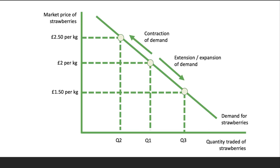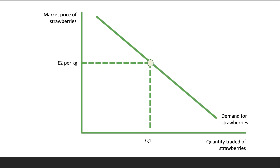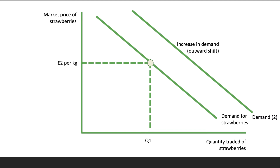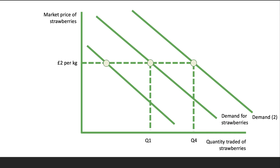If the price of the product itself changes, we move along the demand curve. However, we also know that the position of the demand curve in the XY space can change. At a given price of two pounds per kilogram, it could be the case that for the same price there's a higher level of demand - an increase in demand, or an outward shift. That means for that same price of two pounds per kilogram there's going to be an increase in quantity demanded - from Q1 to Q4. Something must have happened in the market to cause that; it's good news for strawberry growers, who can now sell more at that price or sell the existing quantity Q1 at a higher price.